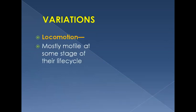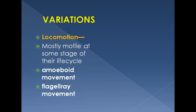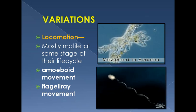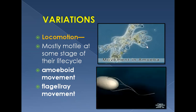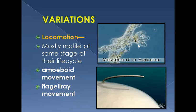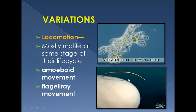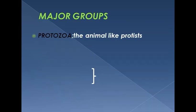Locomotion is found in at least some stage of their life cycle, so most protists are motile. They show amoeboid movement or flagellate movement. This movement is found in animal-like protists, amoeba, and also in some fungi-like protists. Amoeba movement is with the help of pseudopodia — protoplasmic extensions utilized in motility — which is very slow. Flagellary movement is found in flagellates, which are animal-like protists.